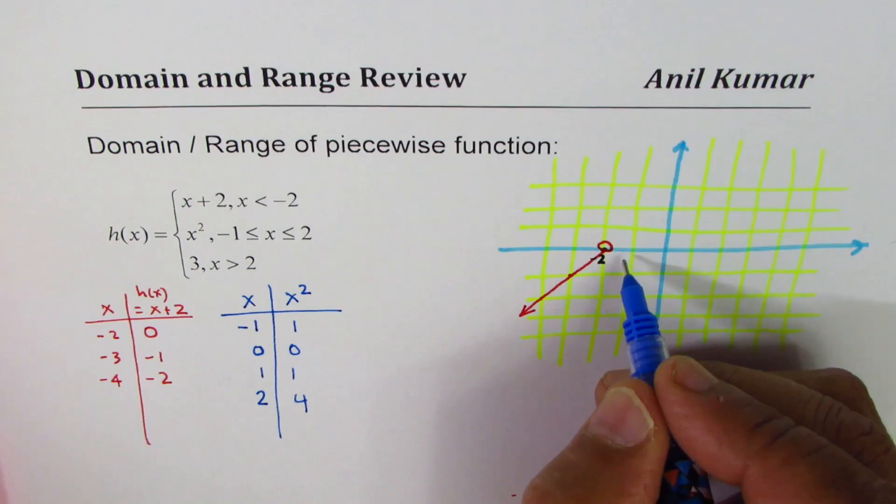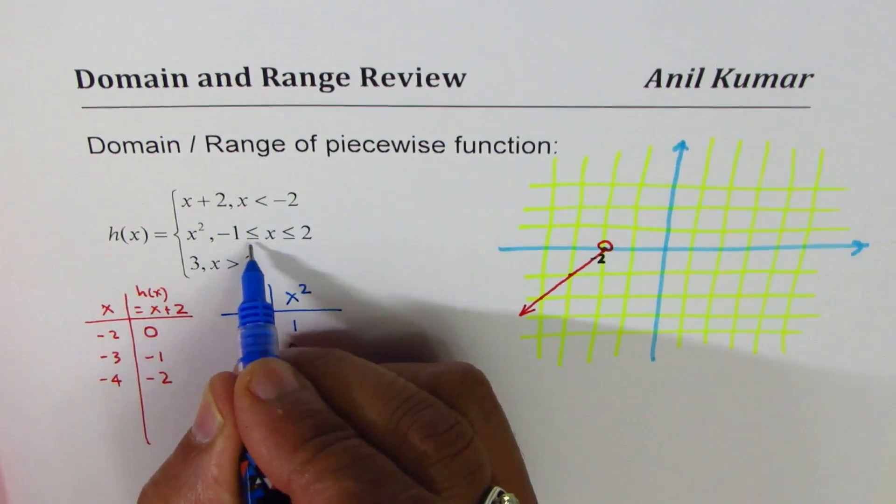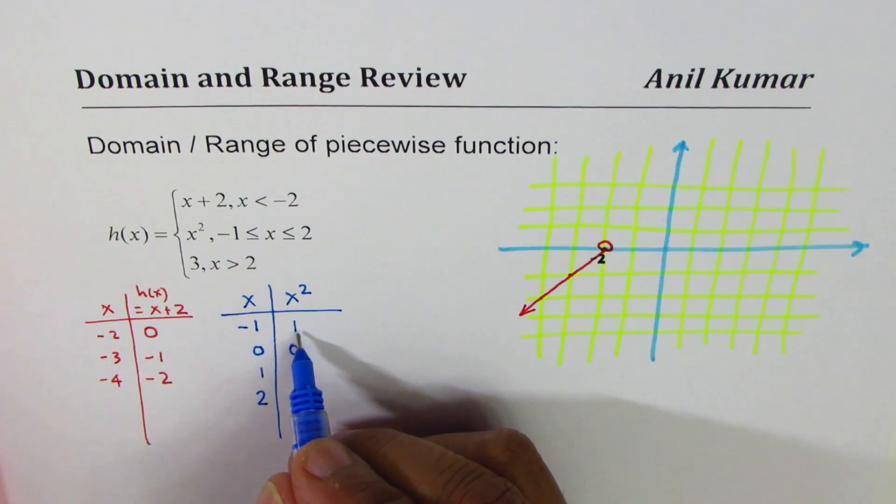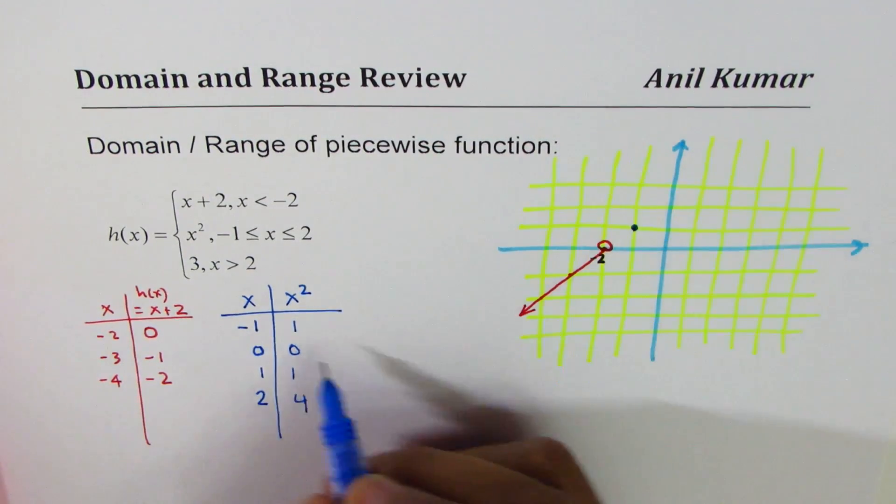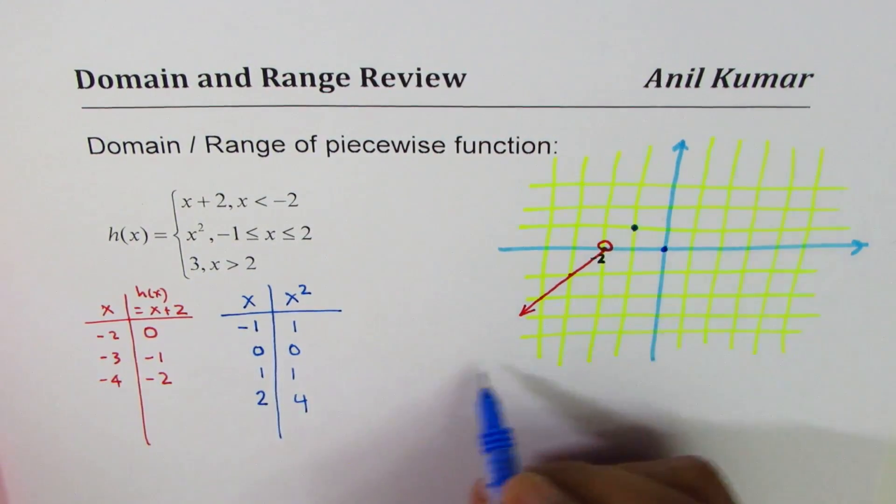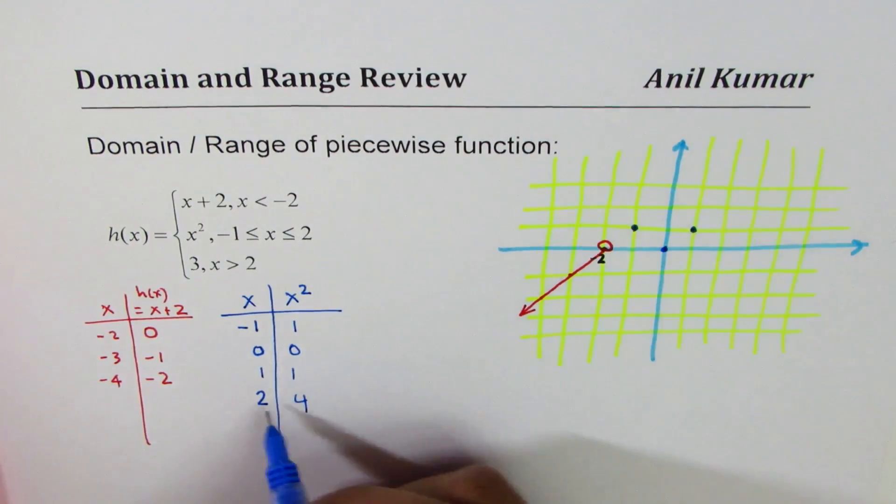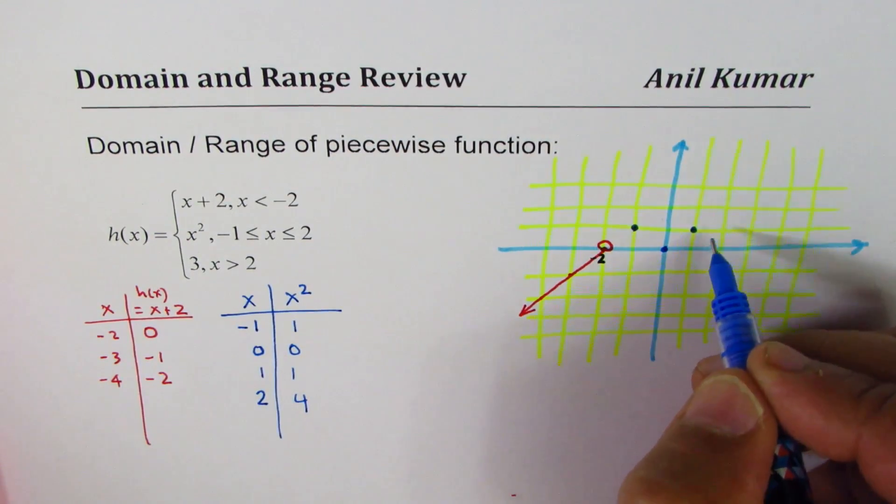Plotting them at minus 1, and these points are included, so filled in circles. At minus 1, the value is 1. At 0, we get 0. At 1, it is 1. And at 2, the value is 4.